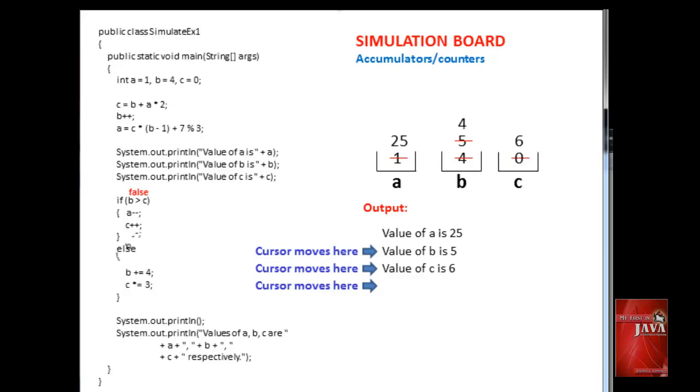Decrement the value of b. B is now 4. Add 4 to b. B is updated with the value of 8. Multiply 6, value of c, with 3. This operation produces a new value for c, which is 18.